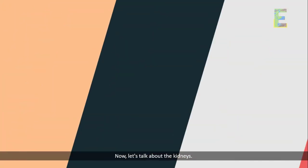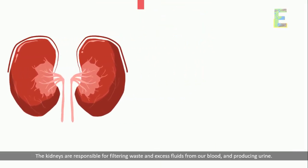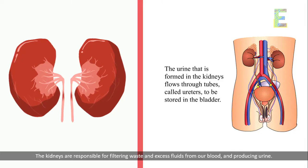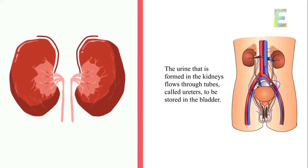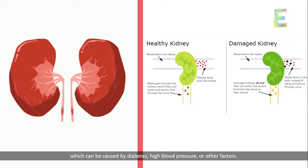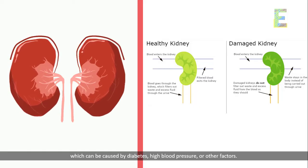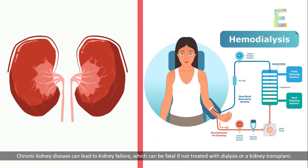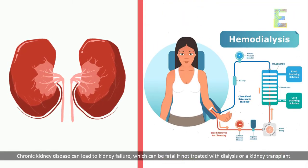Now let's talk about the kidneys. The kidneys are responsible for filtering waste and excess fluids from our blood and producing urine. One disease that can affect the kidneys is chronic kidney disease, which can be caused by diabetes, high blood pressure, or other factors. Chronic kidney disease can lead to kidney failure, which can be fatal if not treated with dialysis or a kidney transplant.